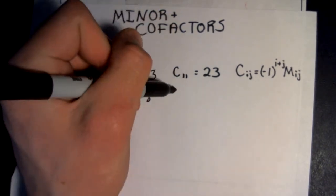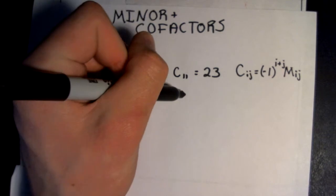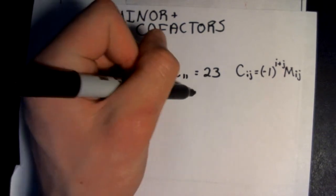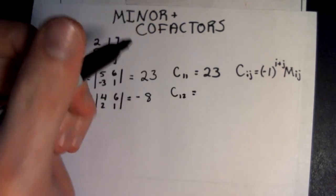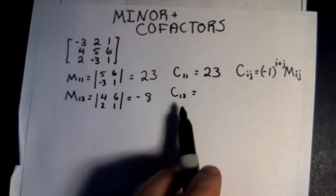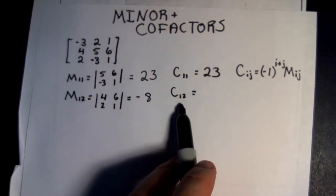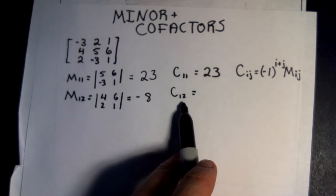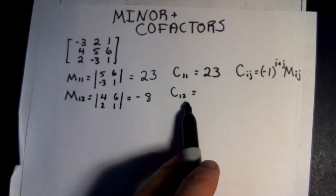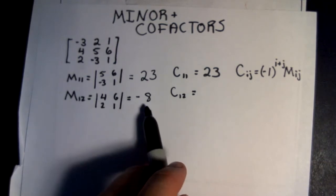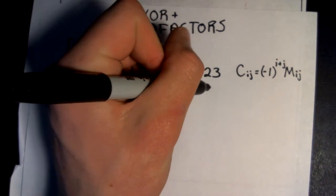Now if we take the cofactor of C12, we know negative 1 cubed — because you have 1 plus 2 — is equal to negative 1 times negative 8, which is equal to 8.